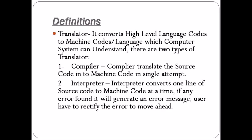A compiler translates the entire source code into machine code in one attempt. The source code is the program designed by the programmer in a high-level language, and the compiler converts it all into machine language at once. An interpreter, on the other hand, takes one line of source code at a time and converts it into machine code. If any error occurs, it generates an error message and the user must rectify the error before the process continues.